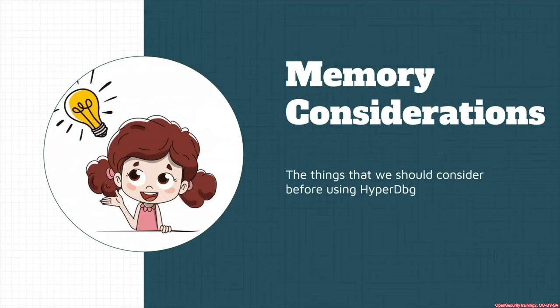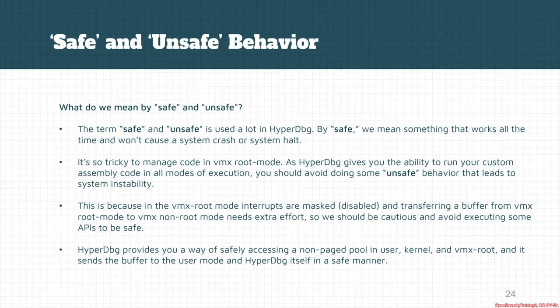Here we discuss some memory considerations — things you should know before using HyperDbg, especially when you want to use a script engine. There are two terms used in the HyperDbg documentation: safe and unsafe. By safe, we mean something that works all the time and won't cause a system crash or halt. HyperDbg gives users the ability to run custom assembly code in all execution modes, including VMX root mode and VMX non-root mode. Whenever code runs in VMX root mode, you should avoid unsafe behavior.